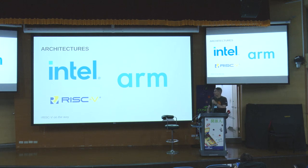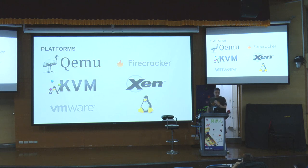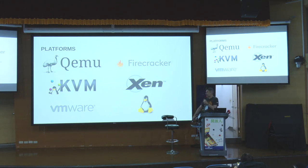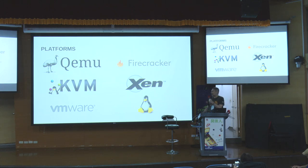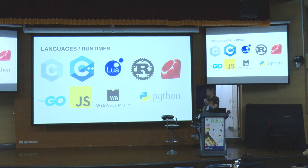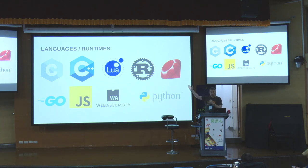We support the major architectures. RISC-V is on the way — it's a pull request we need to review. We support major platforms and hypervisors used in virtualization: KVM-based VMMs like QEMU and Firecracker. We also support VMware and even Linux user space, so you can build Unicraft unikernels as user space ELF images, which is mostly useful for development. We also support most major language runtimes, meaning you can run Unicraft applications written in any of these languages.